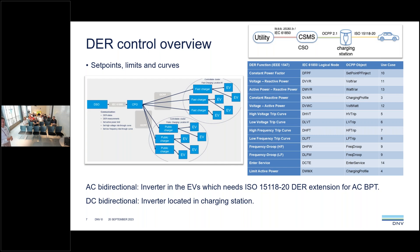For AC bidirectional charging, the BPT working group is also adding extensions for DER support to IEC 15118-20. For AC charging the inverter is in the EV, so that needs to be communicated as well. For DC charging the inverter is located at the charging station, so that is already covered.